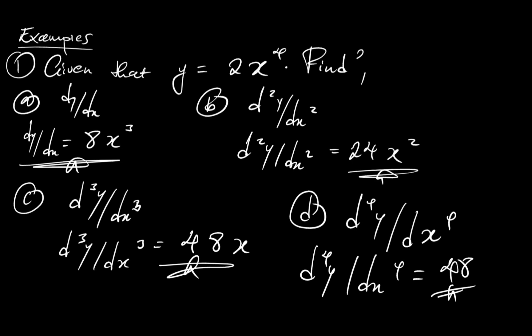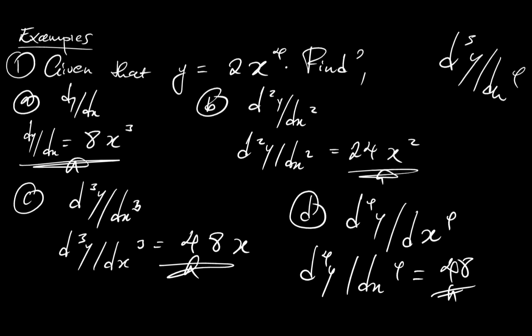Basically, that's how you go about doing this. At times the functions will be more complex than this — it's not always that you get a simple function. I just want you to get the concept: you are simply differentiating over and over again until you reach the required derivative. It could be the fifth derivative — you differentiate the same function five times to get there.